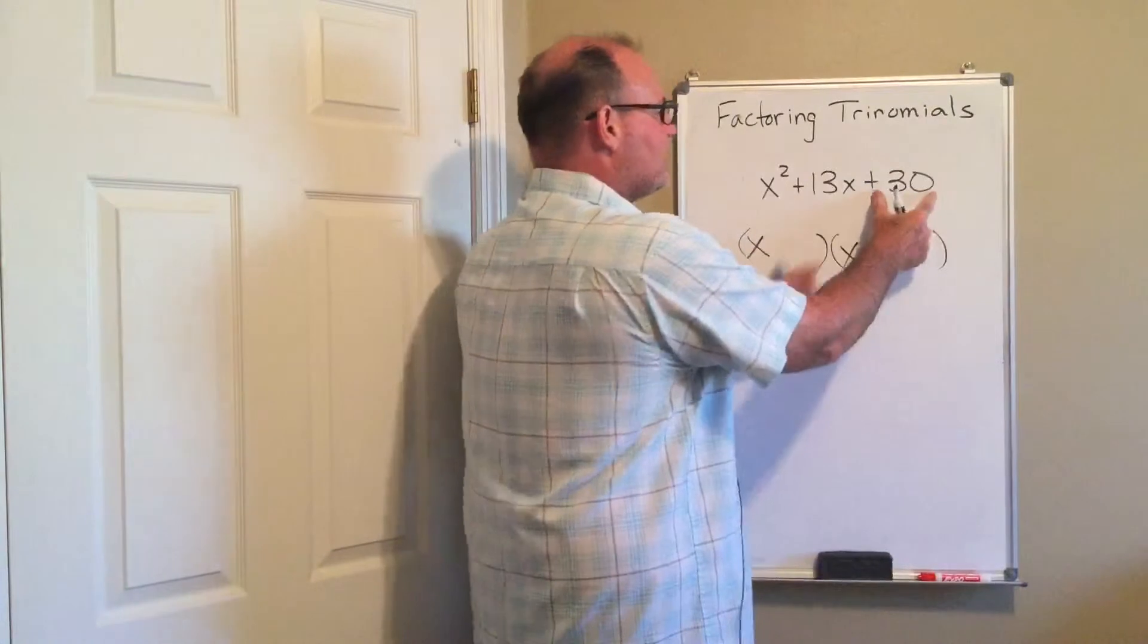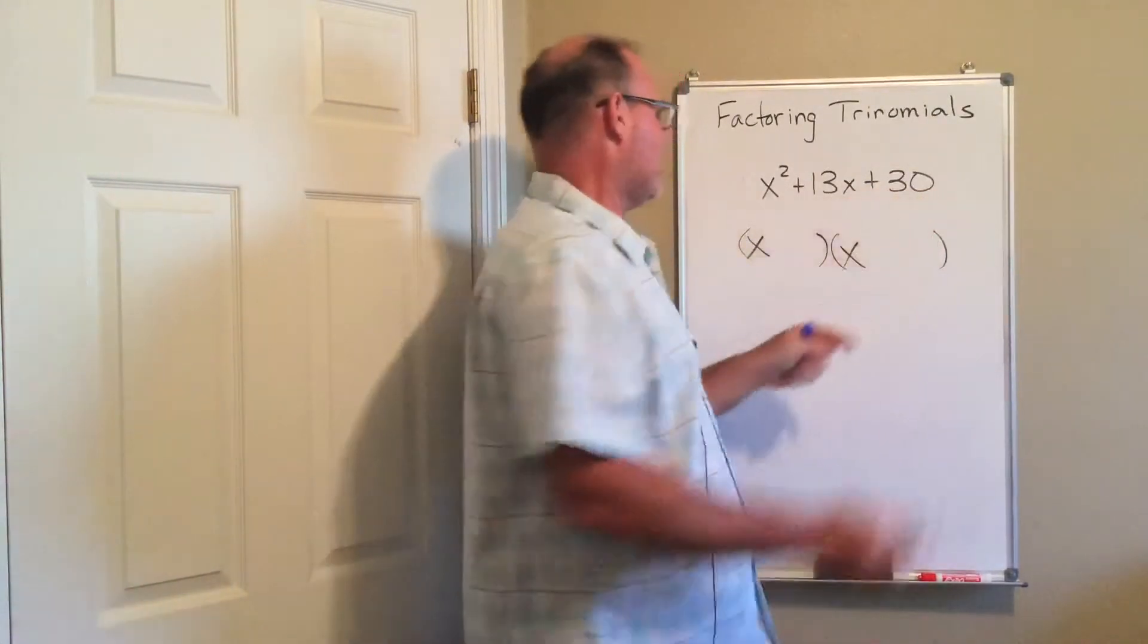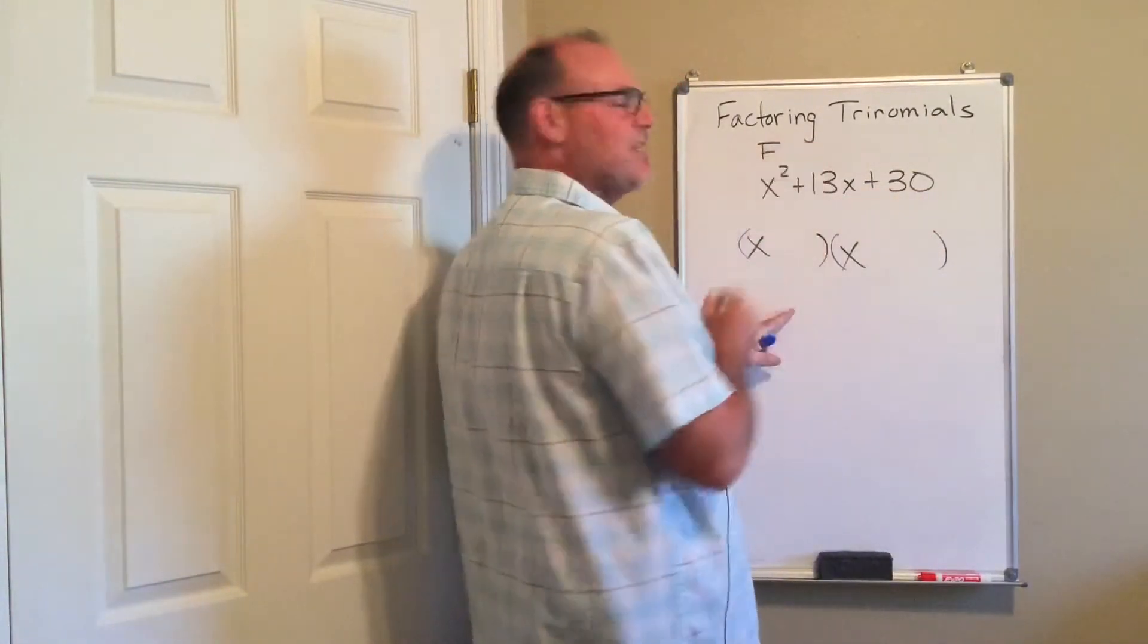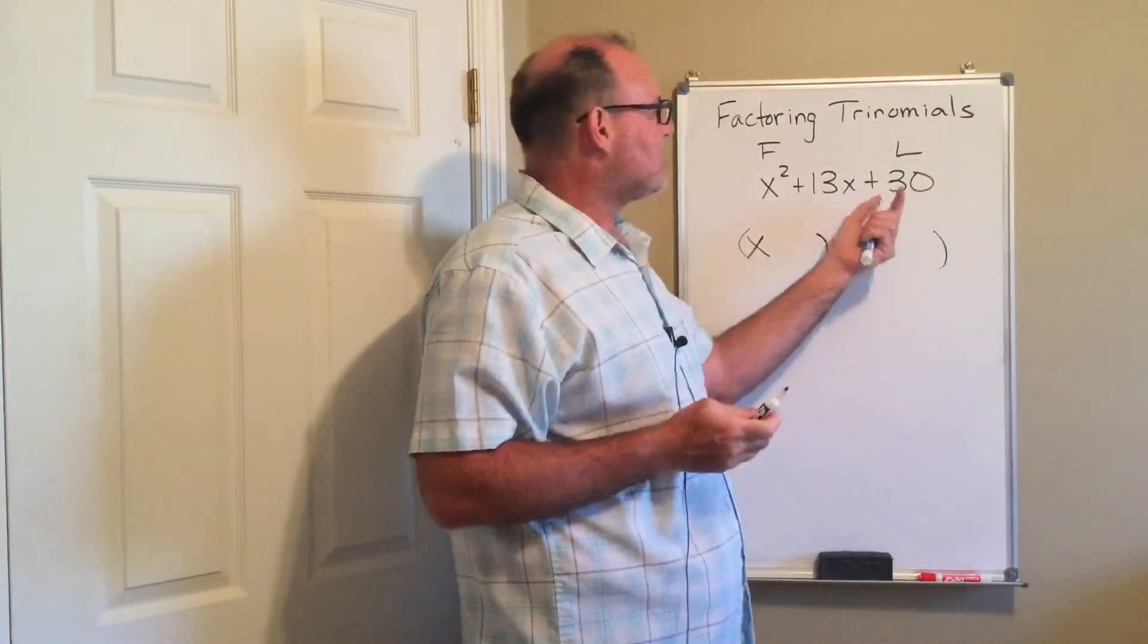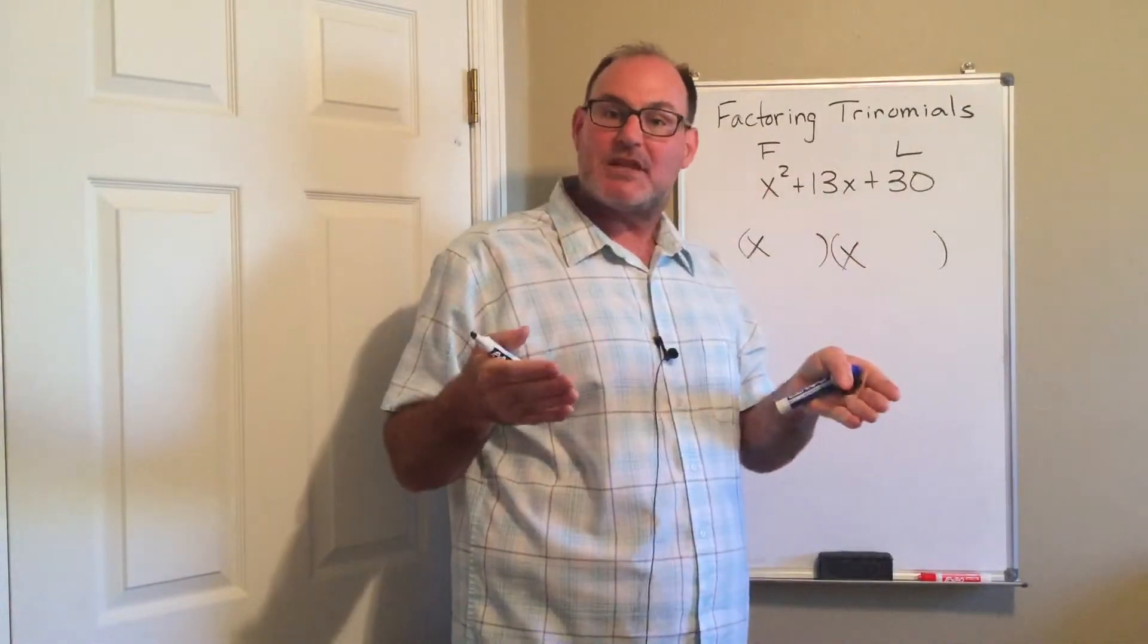The 30 is what I got when I multiplied my lasts together. So in the foiling process, the x squared is the firsts, the 30 is the lasts. And so this 30 gives us a clue.